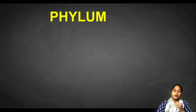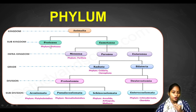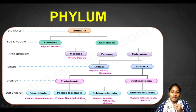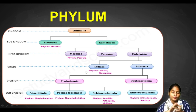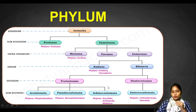In today's class we will be discussing about the different groups. Kingdom Animalia is further divided into sub-kingdoms: Protozoa and Metazoa. The phylums we need to remember are: Protozoa, Porifera, Nidaria, Ctenophora, Platyhelminthes, Nematohelminthes, Annelida, Arthropoda, Mollusca, Echinodermata and Chordata. About each of them we are going to discuss in detail.